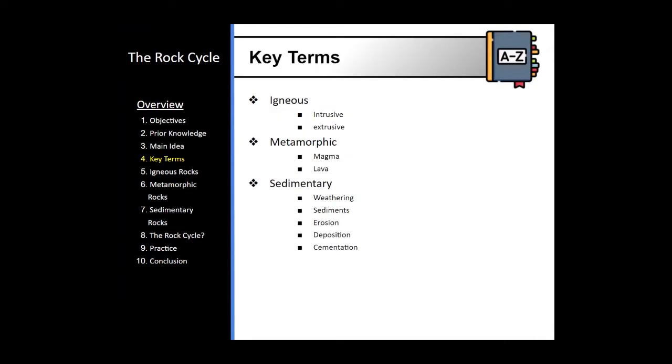So here are some key terms that we're going to discuss during this presentation. There are different types of igneous rock. You need to know the difference between magma and lava. And sedimentary rocks involve many processes that are going to ultimately create sediments that are broken down from weathering into an actual rock.